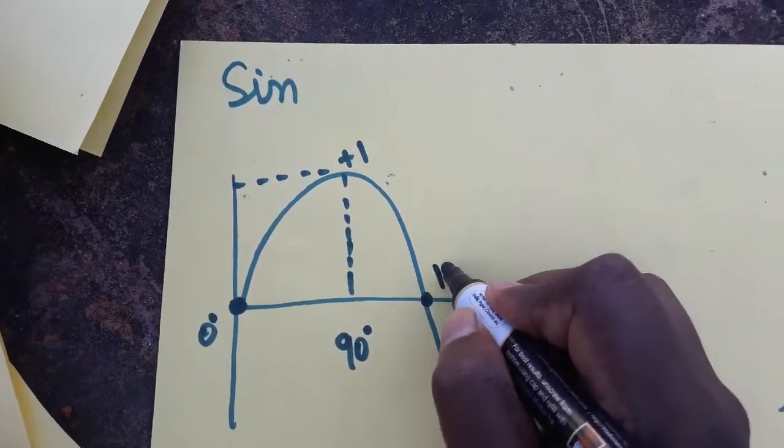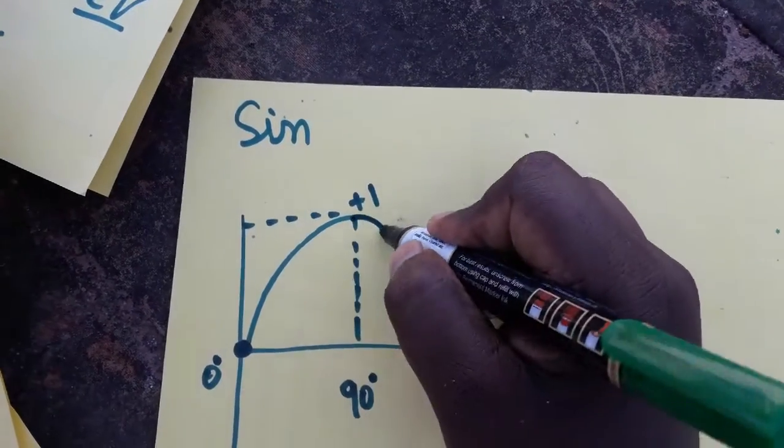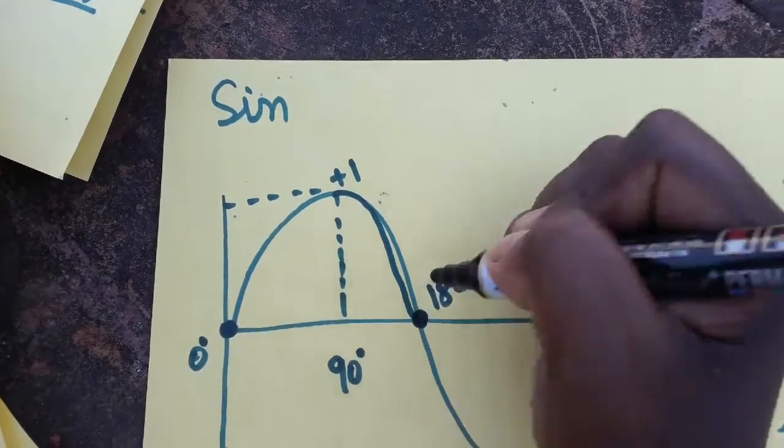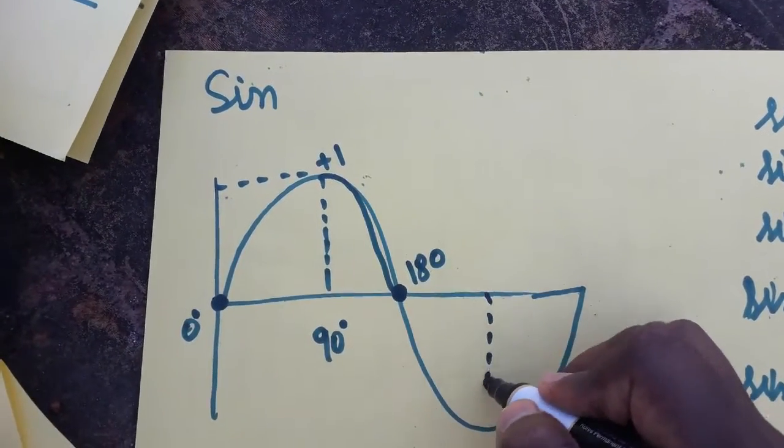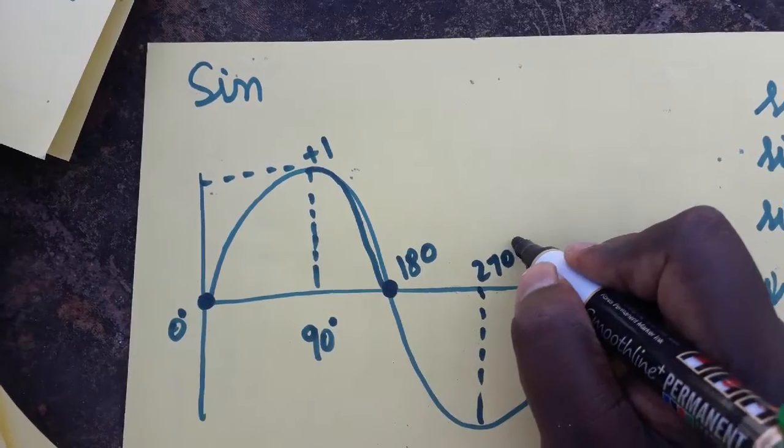At 180 degree the sin value will be again 0. And again this is 270 degree, so at 270 degree the sin graph went below the origin, it is minus 1.